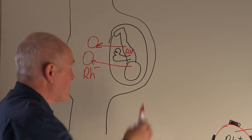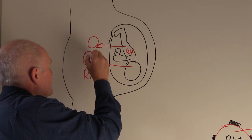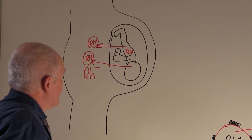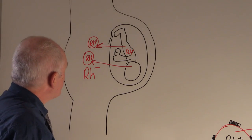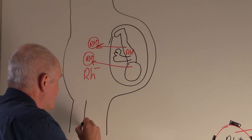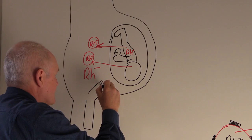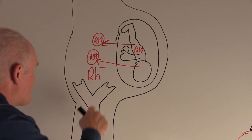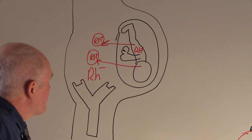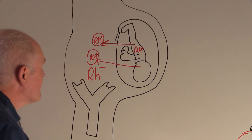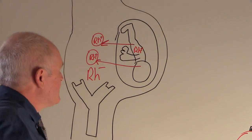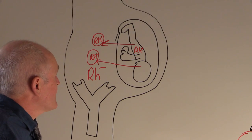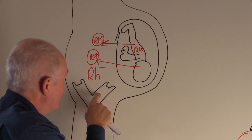Some of the baby's Rhesus positive red cells — through fetomaternal haemorrhage — will get into the maternal circulation. This will certainly happen during delivery if it hasn't already happened in the later stages of pregnancy. This means the mother will make Rhesus factor antibodies — she will become sensitized to the Rhesus factor. During the first pregnancy there's not usually any problem, because most of the sensitization takes place during the birth of the child, and by the time the mother develops the Rhesus factor antibodies after delivery, the Rhesus positive baby has already been born.